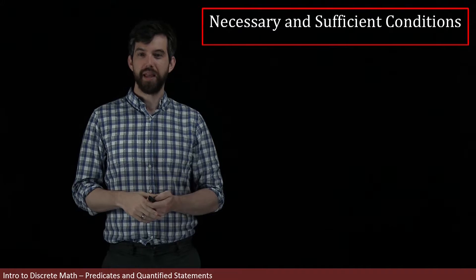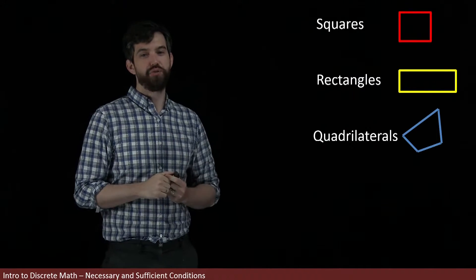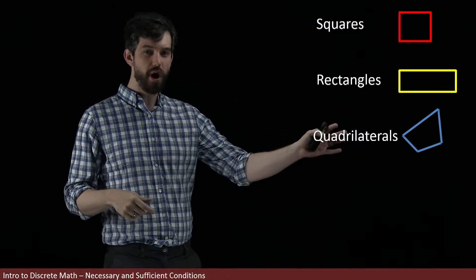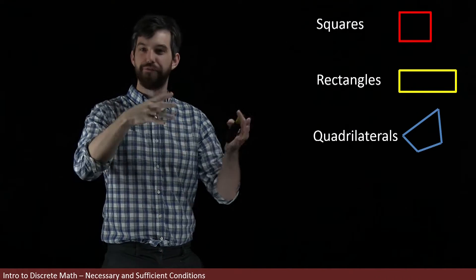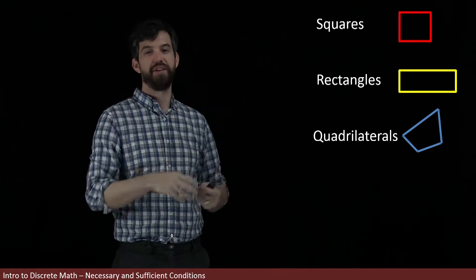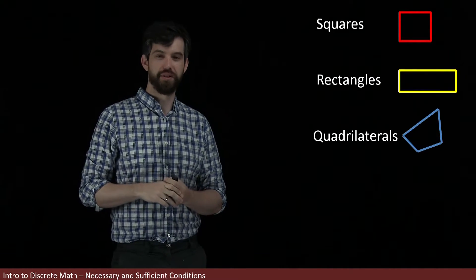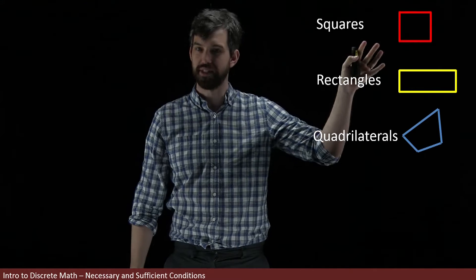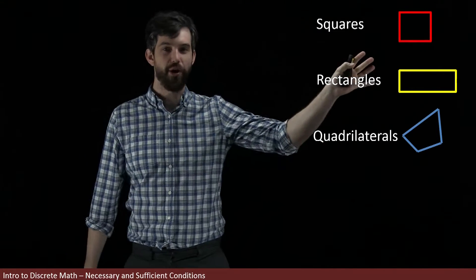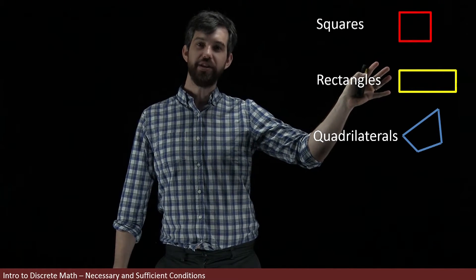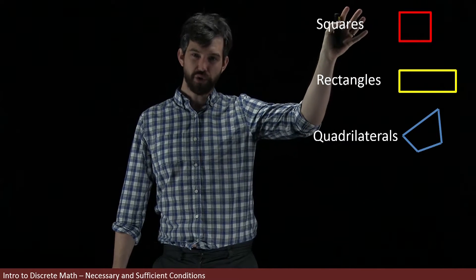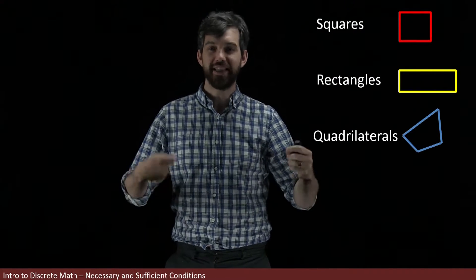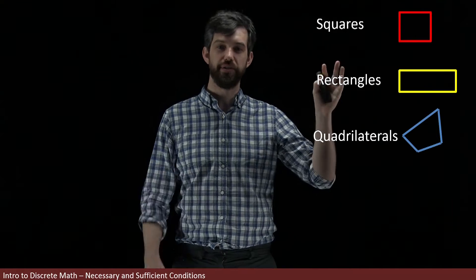Here's the idea. Look at these three different shapes: squares, rectangles, and quadrilaterals. Quadrilaterals are shapes that just have four sides, but they don't fit together as neatly as squares and rectangles do. If I'm particularly interested in trying to deduce that what I was given is a rectangle, the question is: what does knowing that it's a square, or knowing that it's a quadrilateral, do for that goal?